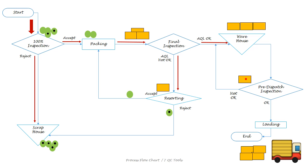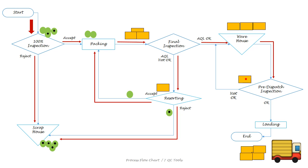At resorting, after 100% inspection of the lot received, OK parts are sent for packing again and defective parts are sent to the scrap house. From the warehouse, boxes are sent for pre-dispatch inspection (PDI). If PDI is not found OK, then boxes are sent back to the warehouse for correction. And if PDI is found OK, then boxes move to loading and the inspection process completes here.